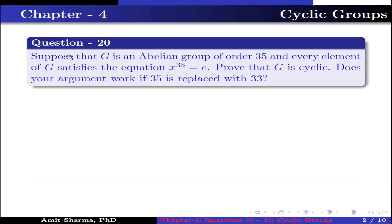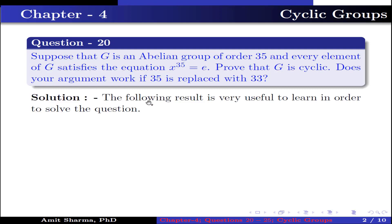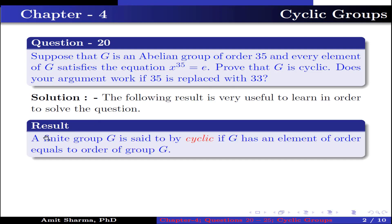Question number 20: suppose that G is an abelian group of order 35 and every element of G satisfies the equation x to the power 35 is equal to identity. Prove that G is cyclic. Does your argument work if 35 is replaced by 33? The following result is very useful: a finite group G is cyclic if G has an element of order equal to the order of the group G.